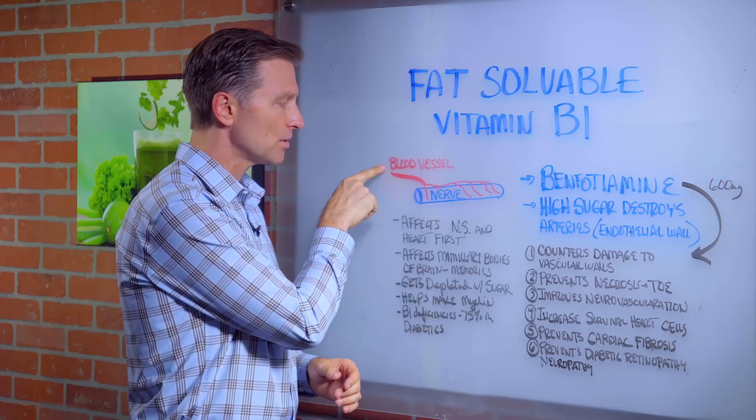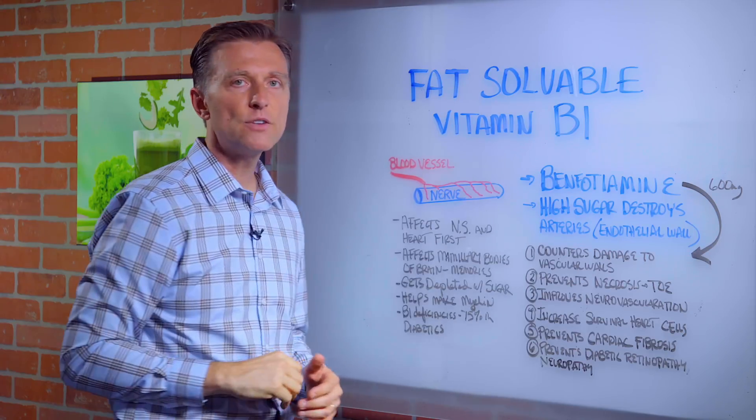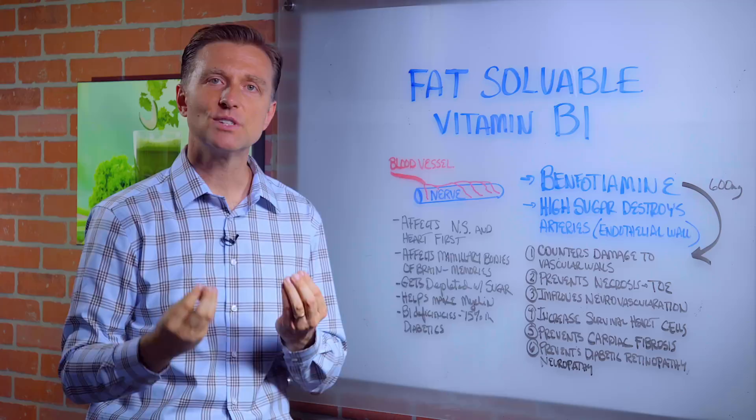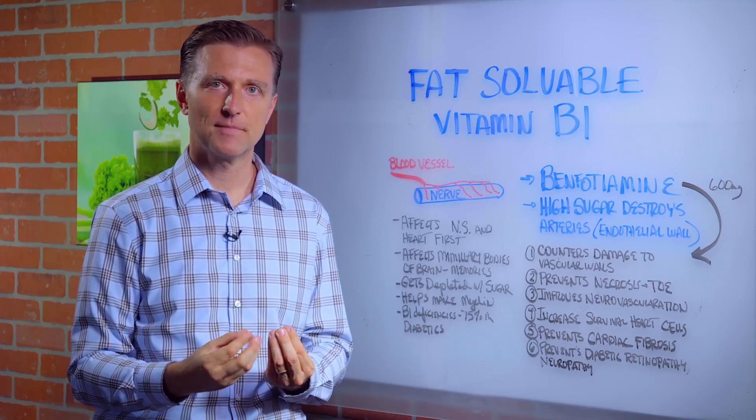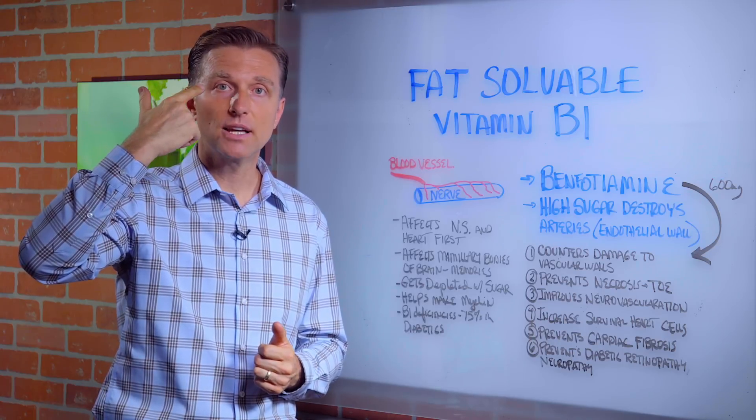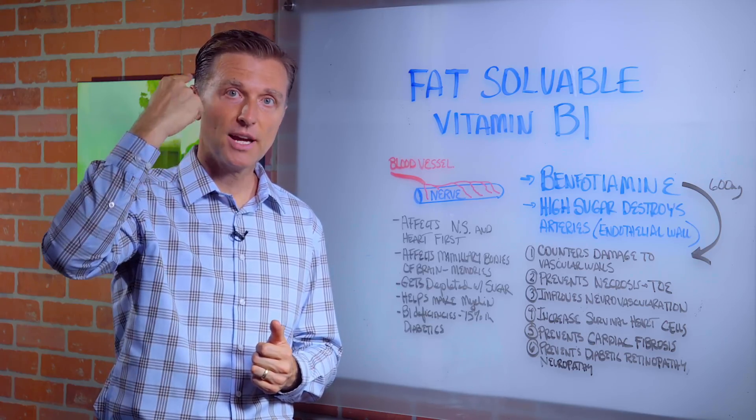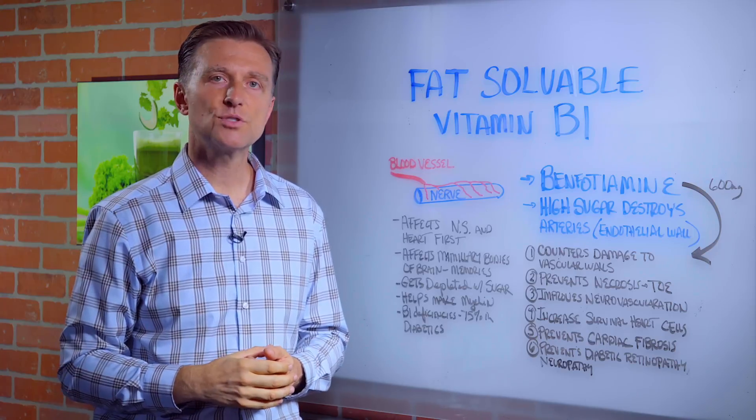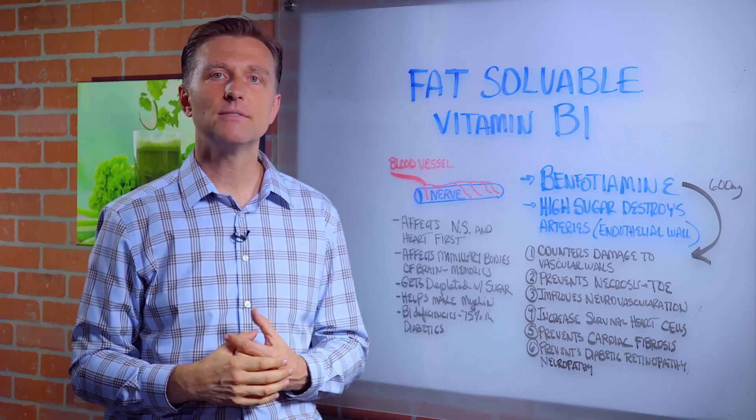Now realize that the blood vessels support the nervous system. Your nerves need blood flow. There are tiny nerves in the cornea of your eye. The retinal nerve that goes in the back of the eye that goes to the brain, that's nerve. Both of those nerves are supplied by blood vessels.